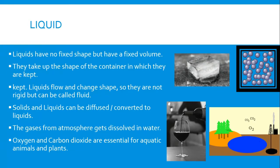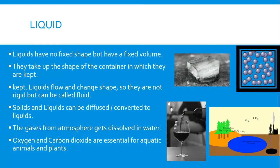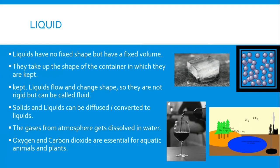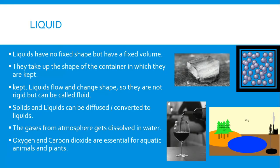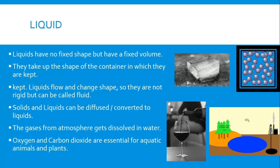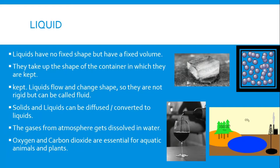Solid things like ice can be converted into liquid by heating. Gases from the atmosphere can also be dissolved in water. As seen in the image, carbon dioxide from factories gets mixed and dissolved in water. Oxygen is always mixed in water because aquatic animals like fish, sharks, and octopuses need oxygen to survive but cannot come outside. Nature has already dissolved oxygen in water so aquatic animals can take it and survive.